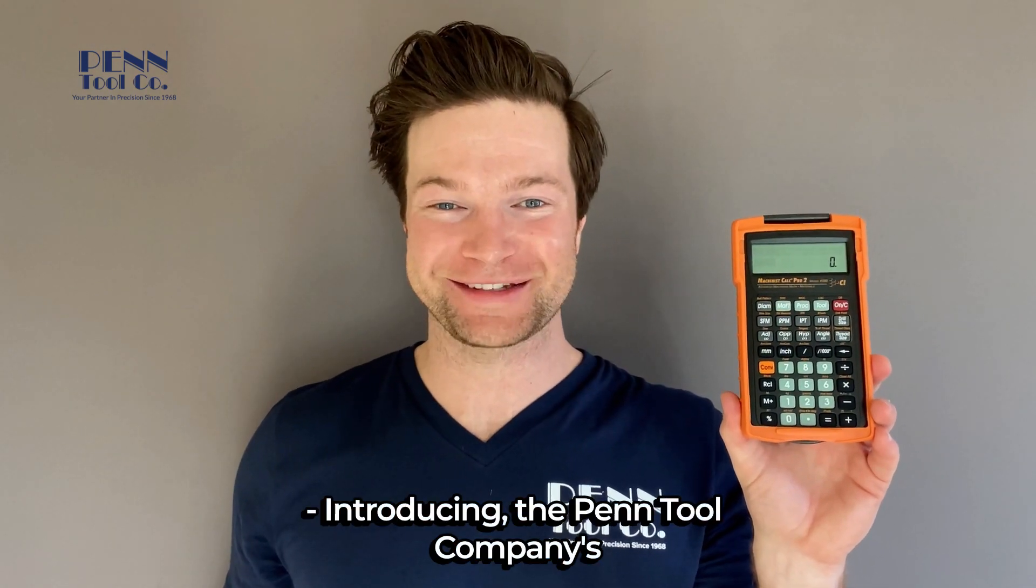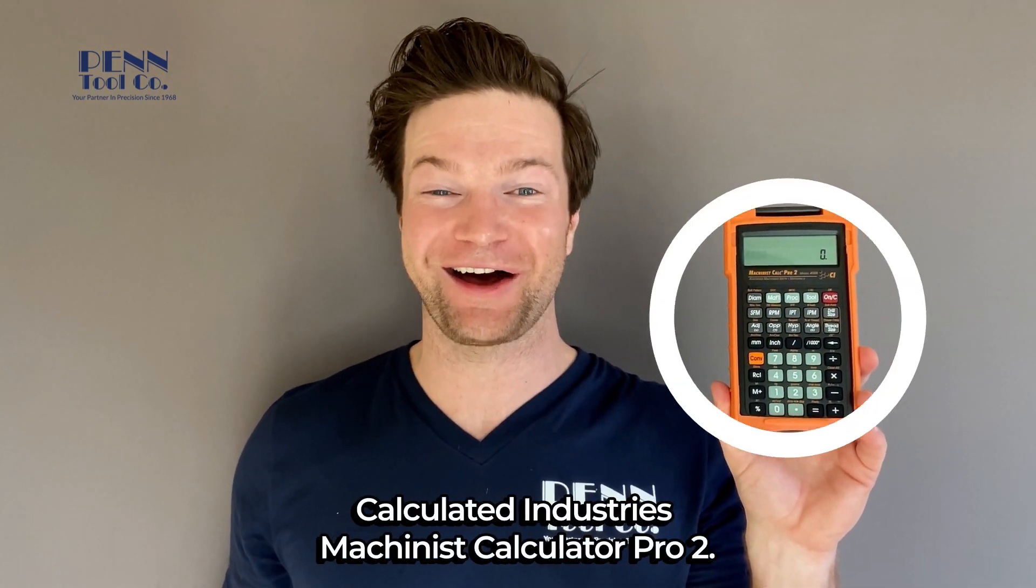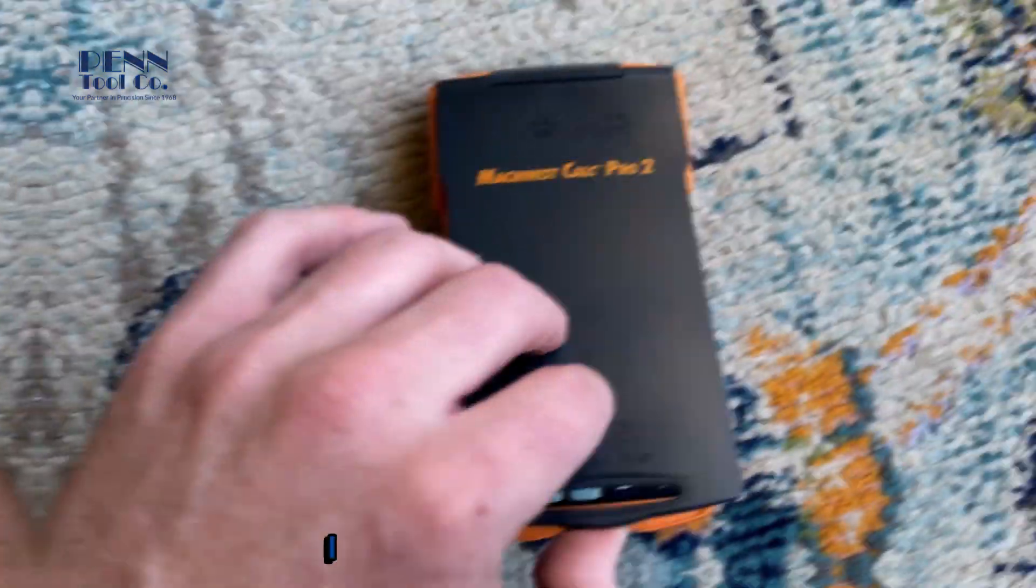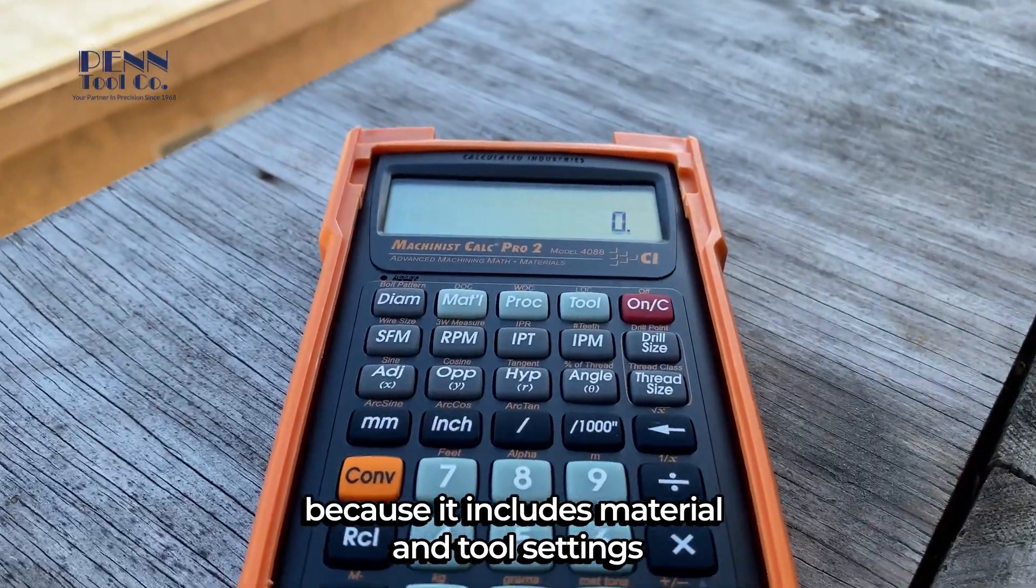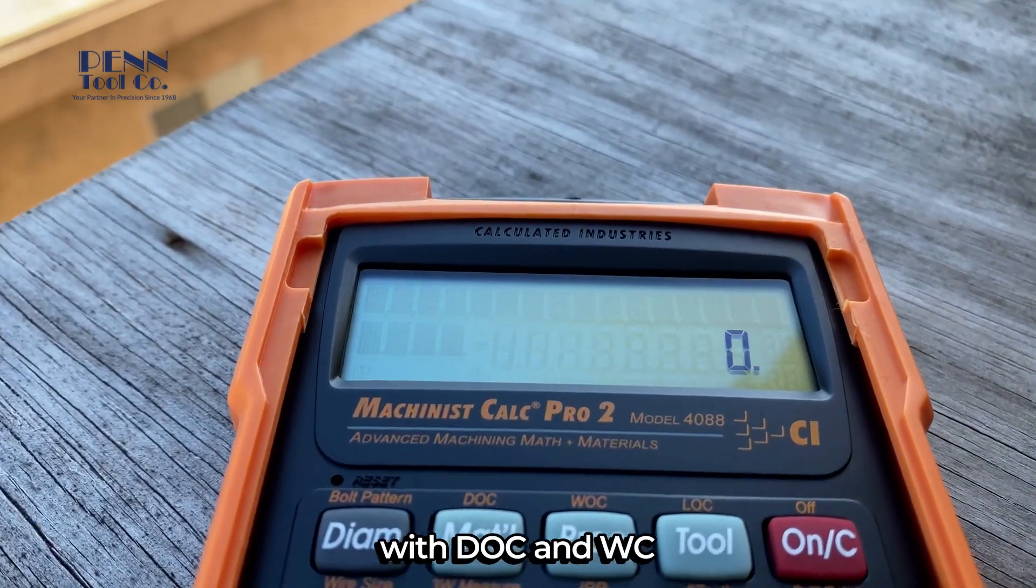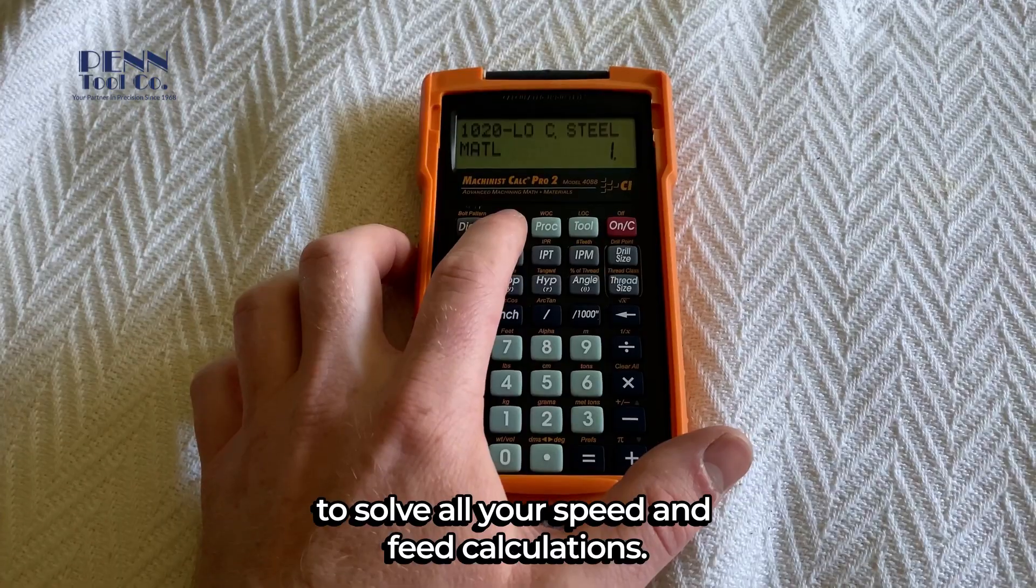Introducing the Penn Tool Company's Calculated Industries Machinist Calculator Pro 2. I decided to give this a go because it includes material and tool settings with DOC and WC to solve all your speed and feed calculations.